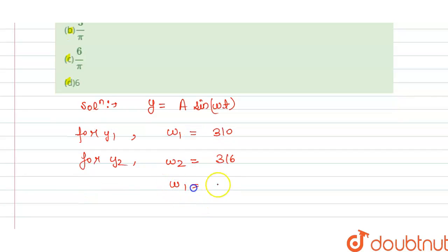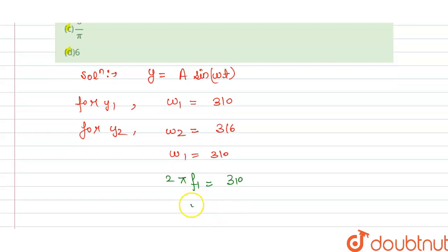We know that omega 1 equals 310, and angular frequency is given by 2π times frequency 1, which is 310. From this we get frequency 1 is 310 divided by 2π, which is 155 divided by π.